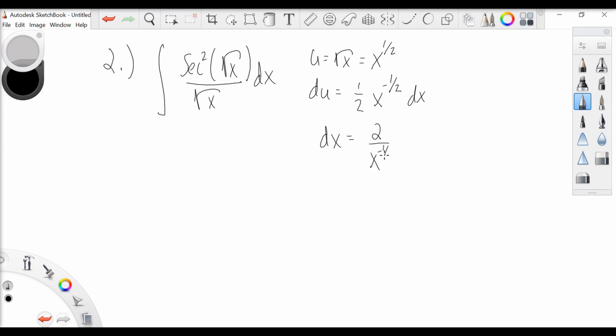Or simply 2 root x du. Now going back to our original integral, we have the integral of secant squared u over root x times 2 root x du. Our root x is cancel.